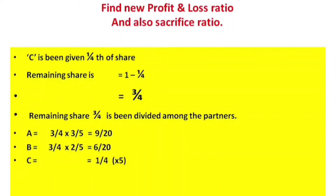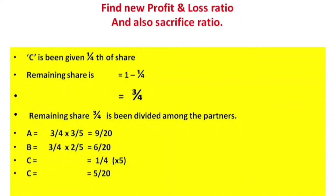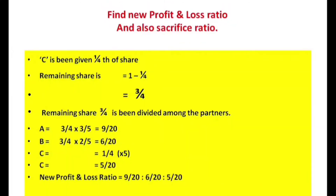A is equal to 9 by 20, B is equal to 6 by 20, C is equal to 1 by 4 which equals 5 by 20. So the new profit and loss ratio is 9:20, 6:20, 5:20 — meaning A:B:C is 9:6:5.